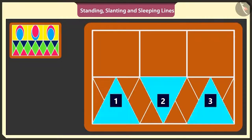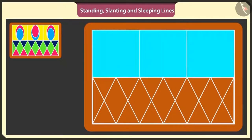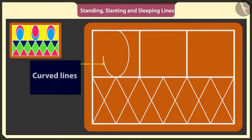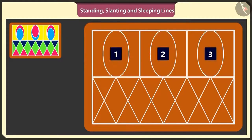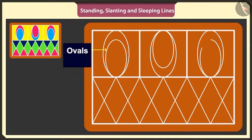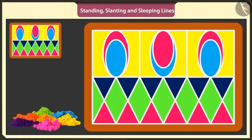I will use slanting lines to make inverted triangles, just like this. This has become a beautiful rangoli. To make it even more beautiful, in these empty squares, I will make three ovals using curved lines. I will make three smaller ovals inside these three ovals. Wow, this is very beautiful rangoli. This is how we fill colors in a rangoli. This is looking very beautiful.